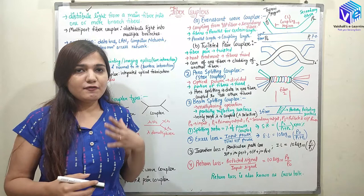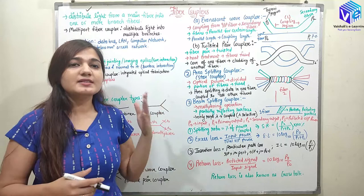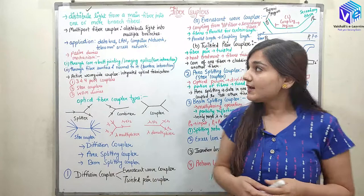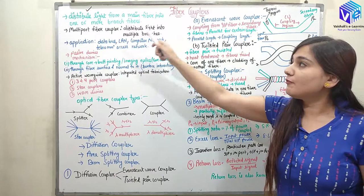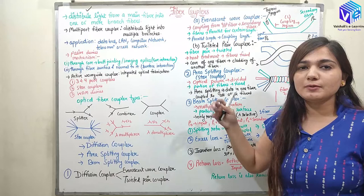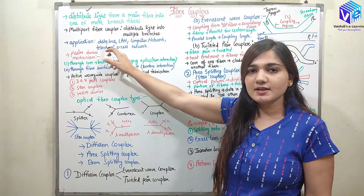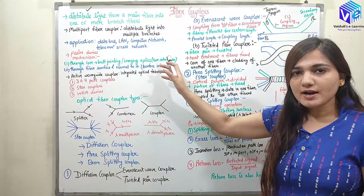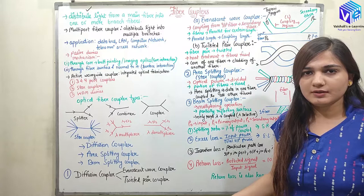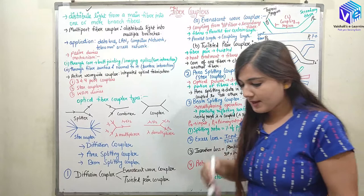We can have different types of couplers. If I am sending the signal from the primary fiber to one secondary fiber only, then it is single-port coupling. After that, we have multi-port coupling, where we distribute the light from one primary fiber to multiple branches — this is called star coupling. The applications of coupling include data buses, LAN (local area network), computer networks, and the telecommunication access network.